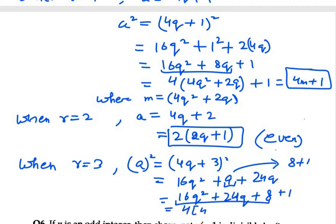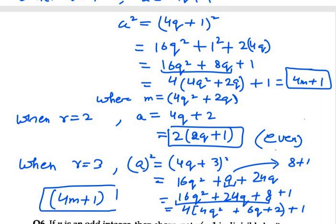We are left with 4 times 4q squared plus 6q plus 2 plus 1. So the term under the bracket will be m, and it can be written as 4m plus 1, which is a perfect square for some value of m. So we get two values: 4m plus 1 at r equals 1 and at r equals 3.